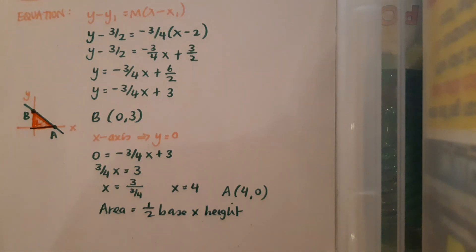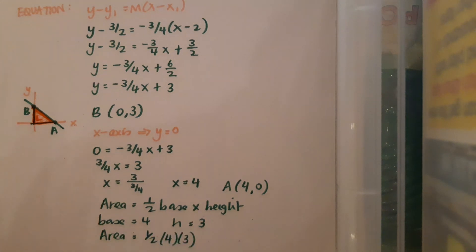And obviously here I know how long my base is going to be, because I know that A is the point (4, 0), so it's a distance of 4 from the origin. So my base equals 4, and my height equals 3, because that's my distance that B is from the origin also. So by substituting into the formula for the area of a triangle, I get an answer of 6 units squared.